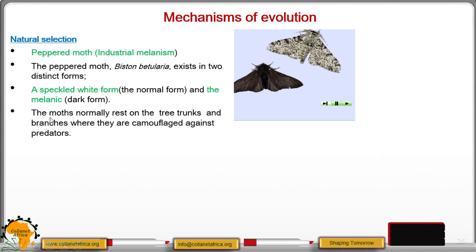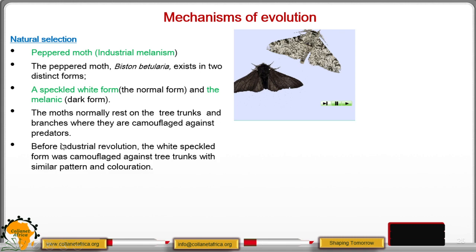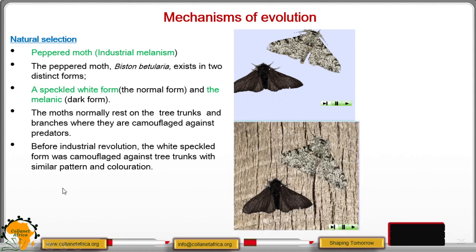The moths normally rest on tree trunks and branches where they are protected against predators. Before the industrial revolution, the white speckled form was camouflaged against tree trunks with a similar pattern and coloration.